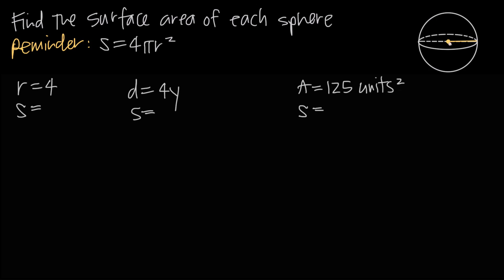The radius is shown here in orange — it's the distance from the center of the sphere to the edge of the sphere. The diameter, remember, is the distance all the way across, so it's double the radius.